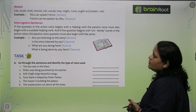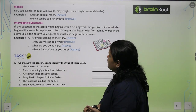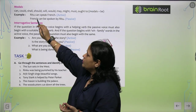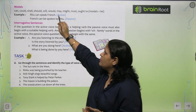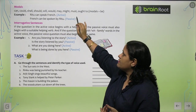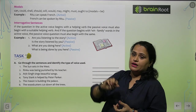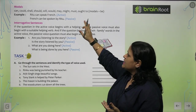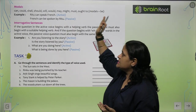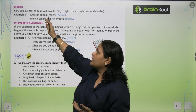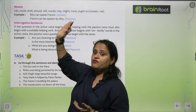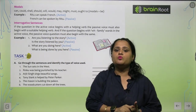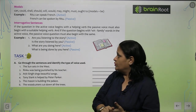Models ke saath bhi hum Passive Voice banate hain — jaise can, could, shall, should, will, would, may, might, must, or to — in ke saath hum plus BE lagayenge. For example, 'Ritu can speak French' becomes 'French can be spoken by Ritu.'